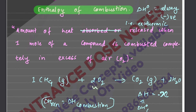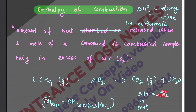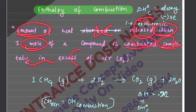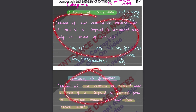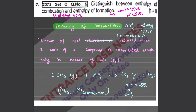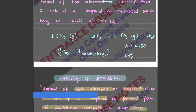The enthalpy of combustion is always negative — it is the amount of heat released when one mole of compound is completely combusted in excess of air. The enthalpy of combustion is always negative — always exothermic. The enthalpy of formation, however, can be negative or positive — that is, it can be endothermic or exothermic. This is the main topic of thermodynamics.